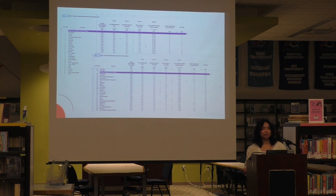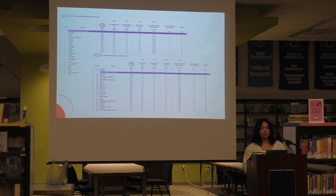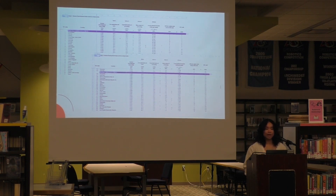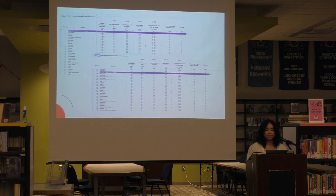I used a spreadsheet put together by the United Nations, which is publicly accessible online. It sorted every country into very high human development, medium, low, and so on. As you can see by the columns, it is categorized into HDI, life expectancy at birth — which I translated over to the healthcare system — expected years of schooling for education, and GNI per capita for the workforce and economy.